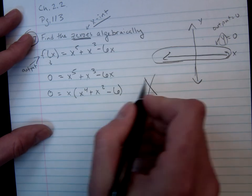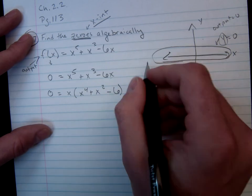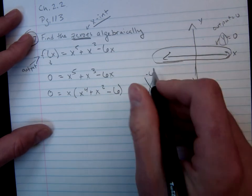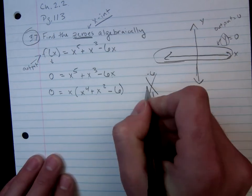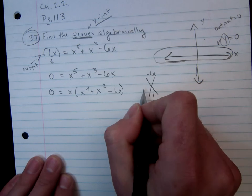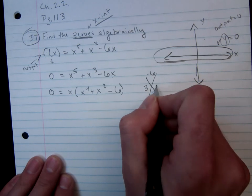So up top, I'm going to put 1 times negative 6. And I'm looking for two numbers that multiply to equal negative 6 and add to equal positive 1. And if you kind of mess around with those, you can see that that would be 3 and negative 2.